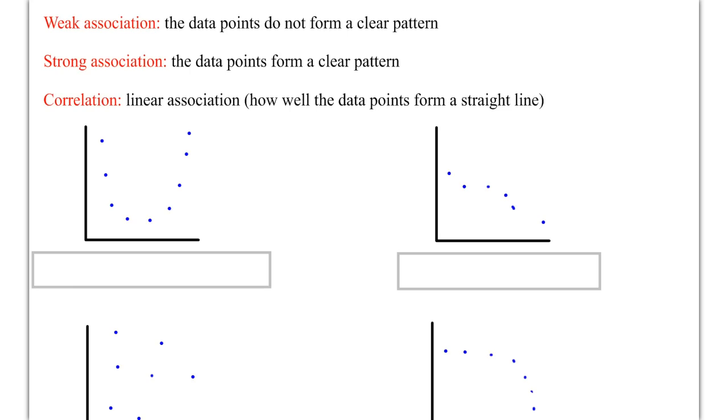Let's talk about association and correlation in a scatter plot. What we're looking for is the general pattern here. Association refers to how much the data forms a pattern. So if you have strong association, you have a clear pattern. If you have weak association, you do not form a pattern.